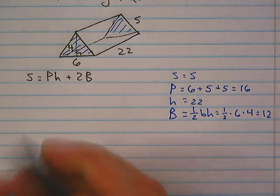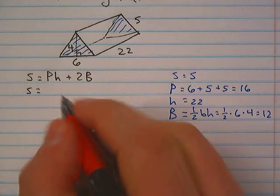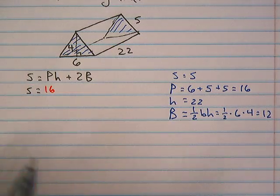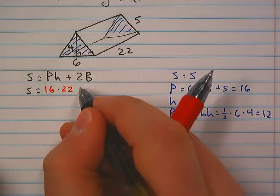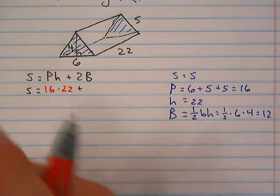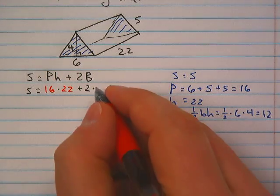We're going to uncover this now. We're going to substitute these values into our equation and solve. So our S is still S and that's equal to 16 was our perimeter times 22 and we're going to add 2 times the area of our base which came out to be 12.